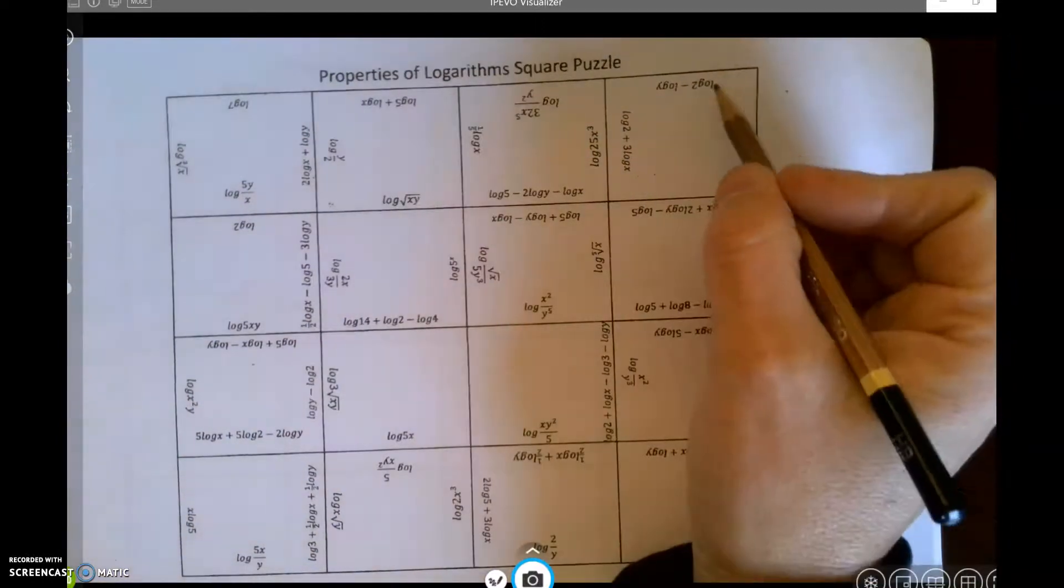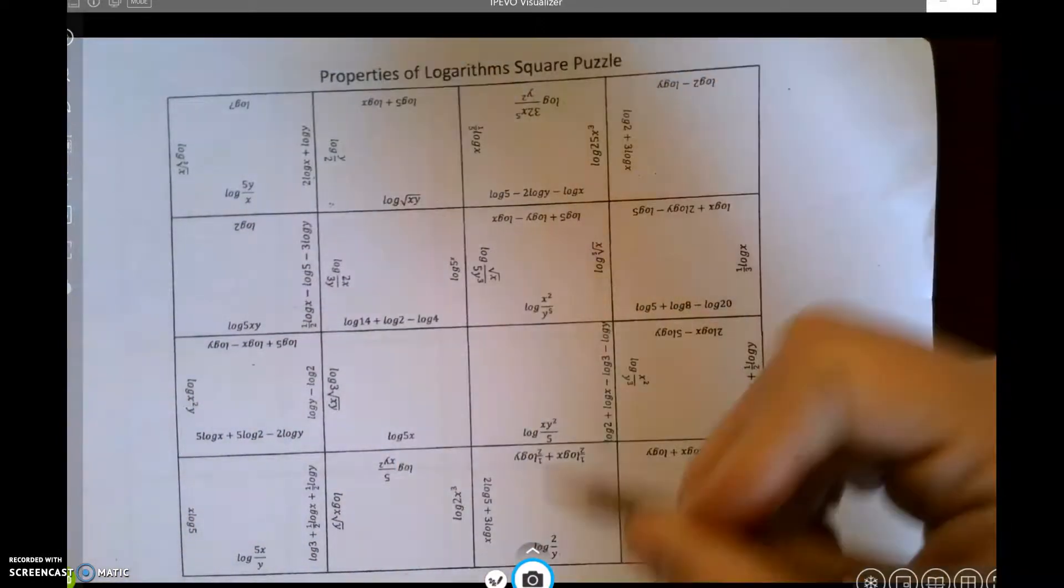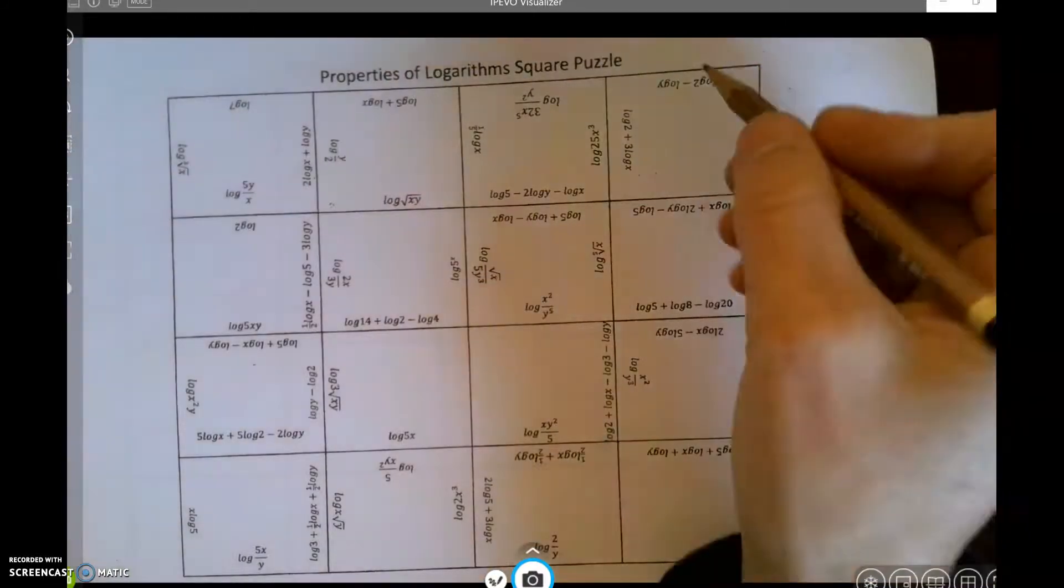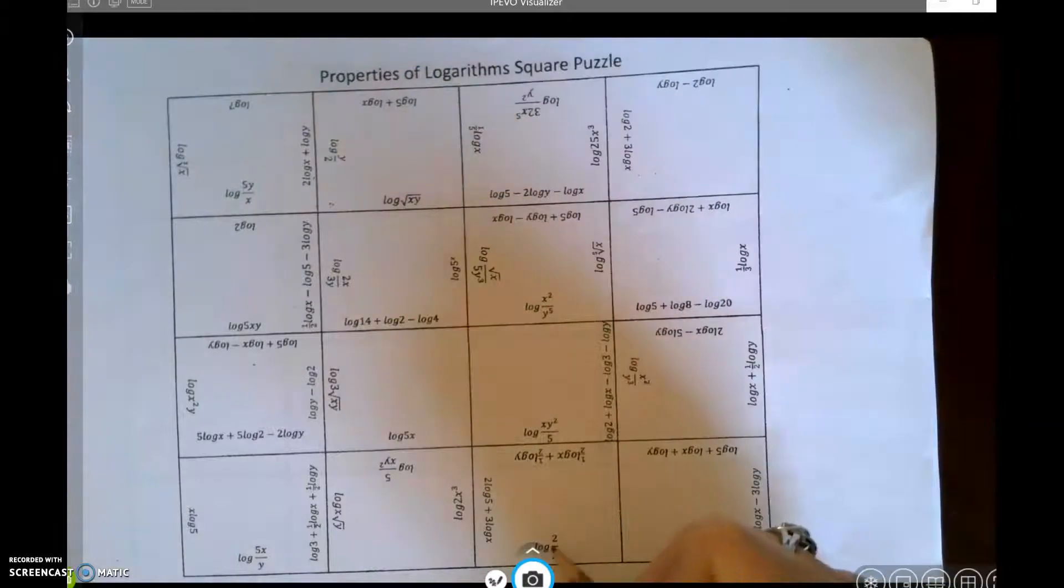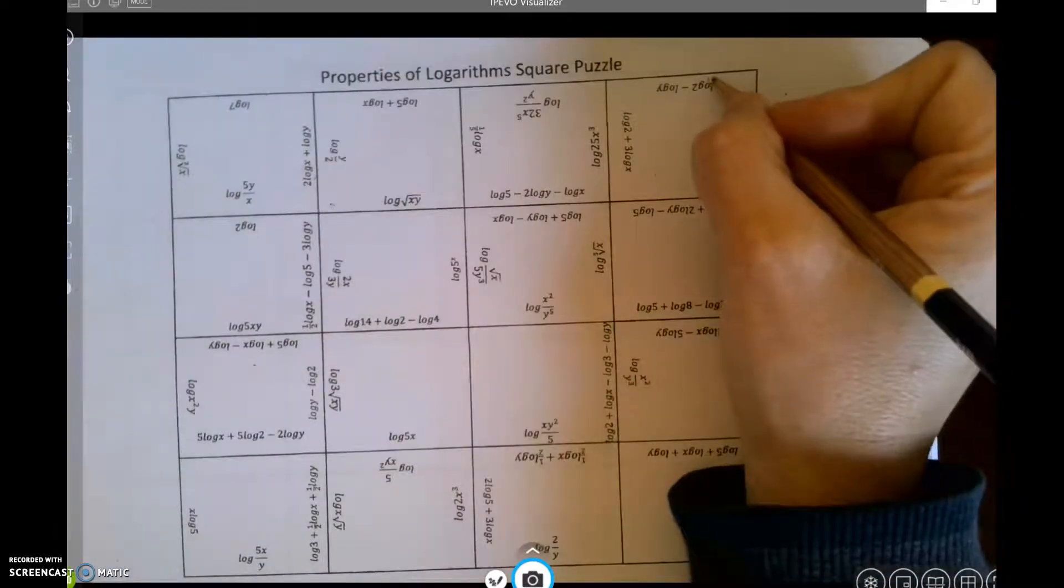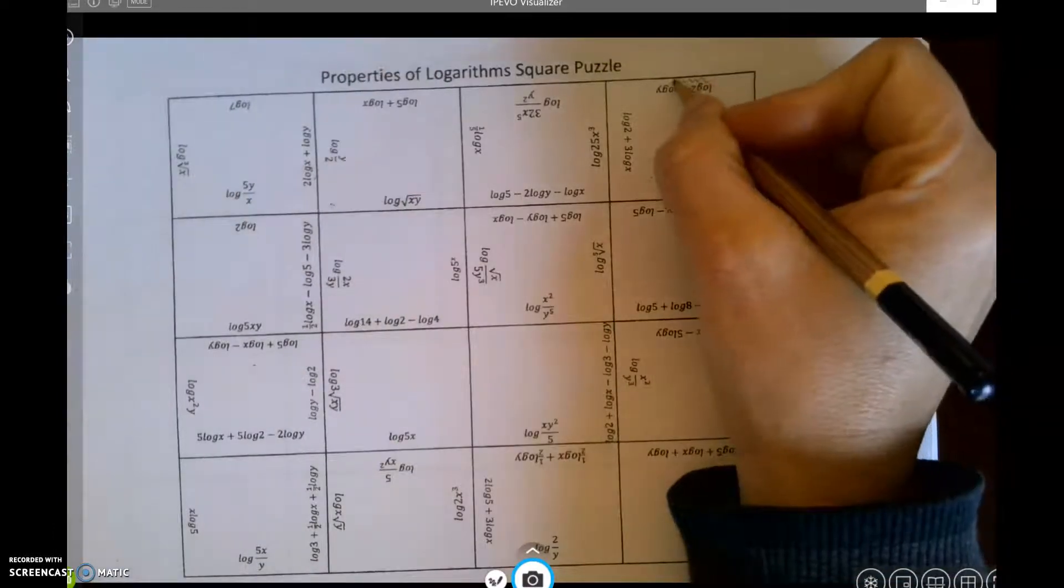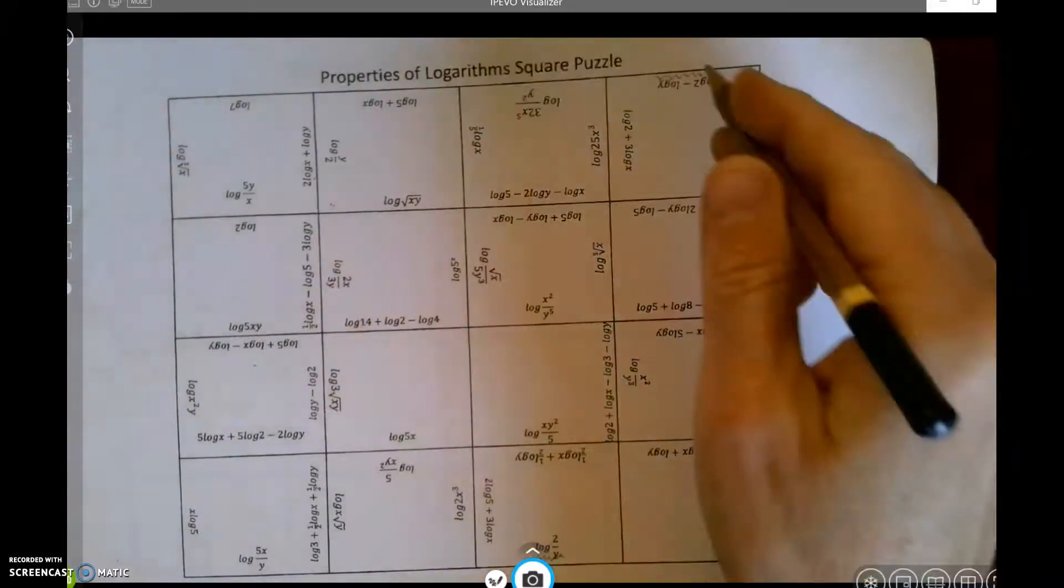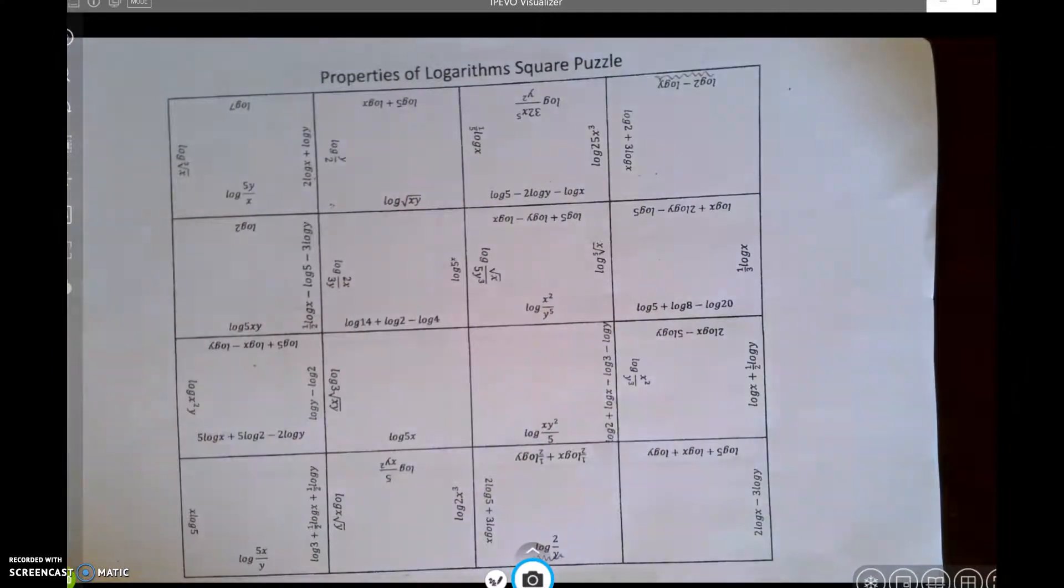So what you can do is you can start to do some of the solving while you have all of them to look at like this. I could say, okay, this goes with this. Maybe I'd want to put a squiggly line under this, and I could put a squiggly line under this, and I know my two squiggles have to match up.